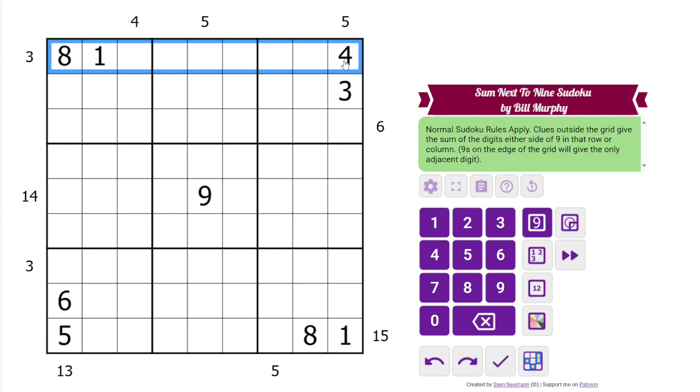We have normal Sudoku rules: 1 to 9 in each row, column, and 3 by 3 box. Additionally, we have some clues outside the grid, and the clues tell us the sum of the digits on either side of 9 in that row or column.